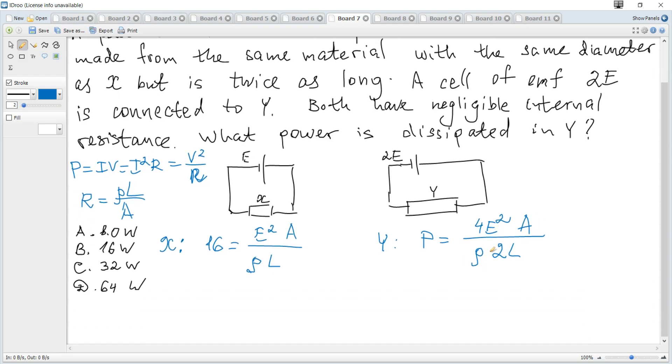And you may just divide left-hand sides and right-hand sides. Or you may substitute. Substitute what? That E squared times A over Rho L is 16. So power becomes 4 over 2 it's 2. E squared A over Rho L and it is equal to 16. So it becomes 2 times 16 which is 32 watts.